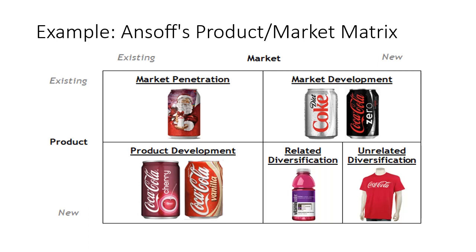You can also see the Coca-Cola example across all four quadrants. First, market penetration — existing product for existing market. Second, market development — market is new but product is existing. Third, product development — new product such as Coca-Cola Cherry or Coca-Cola Vanilla for the same existing market. Fourth, diversification — related diversification such as a vitamin syrup or vitamin juice; and unrelated diversification like an apparel or clothing business, which is totally unrelated to beverages.